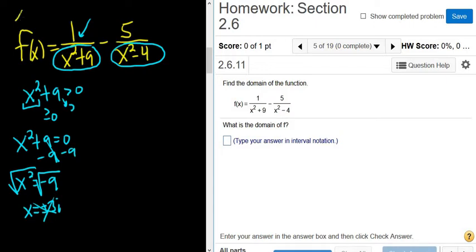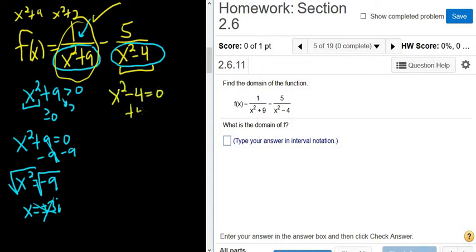So whenever you have x squared plus a number on the bottom of your fraction, like these here, there's no issue. So no problems here. This is OK. For this piece here, we're looking for what makes the denominator 0. So we take the bottom and set it equal to 0. Then just add 4 to both sides. So we end up with x squared equals 4.